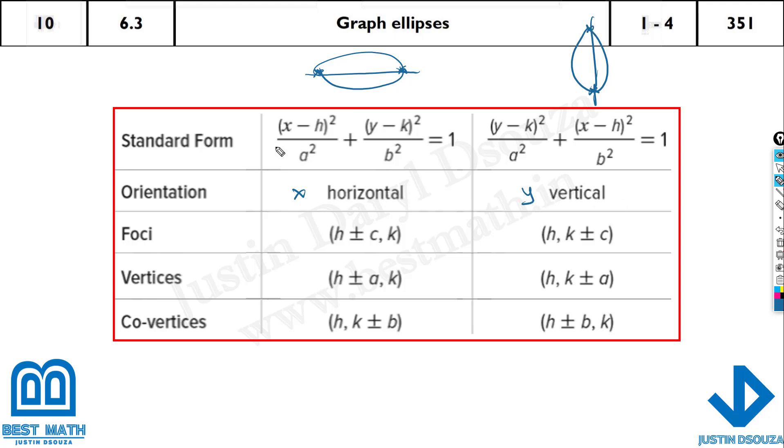And this very important thing in the standard form: when it is along horizontal, x must be written first. (x - h)² / a². Whereas if it is along the vertical axis, you can see y divided by a².